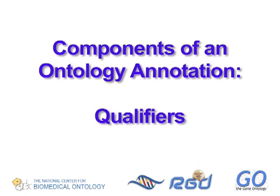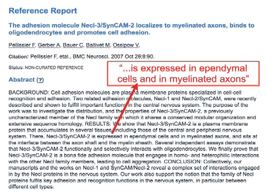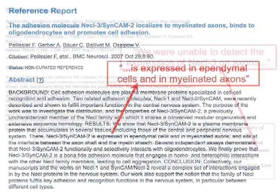In some circumstances, it is necessary to modify or limit the meaning of an ontology term to express what the research shows. The Gene Ontology uses term qualifiers to do that. For instance, data from one reference shows that the cell adhesion molecule CADM2, also known as NECL3, is localized to axons in the cerebellar white matter,